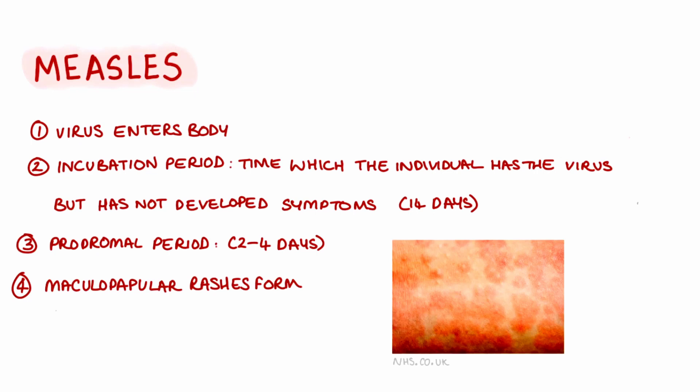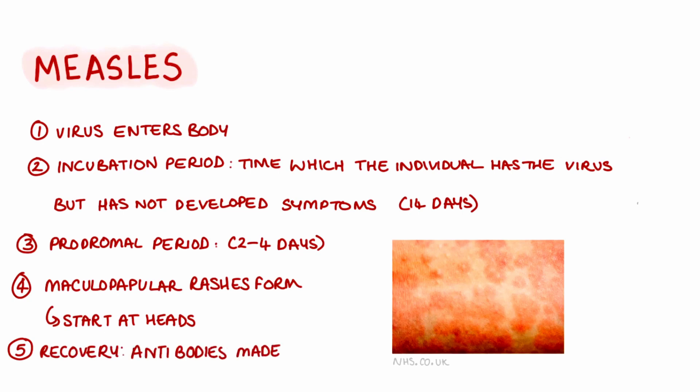They are medically known as maculopapular rashes. In terms of shape, the rashes are quite blotchy. Usually they start at the head and then spread down to the rest of the body. Once the rashes have appeared, the viral load usually decreases and the body goes into the recovery phase whereby antibodies are made. This usually takes around 15 days.